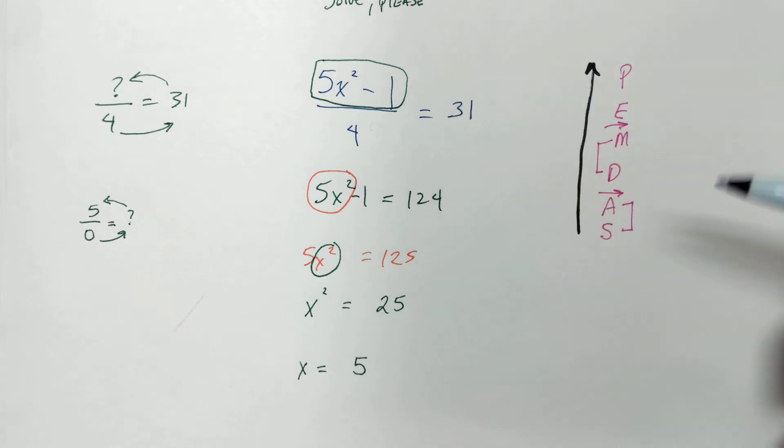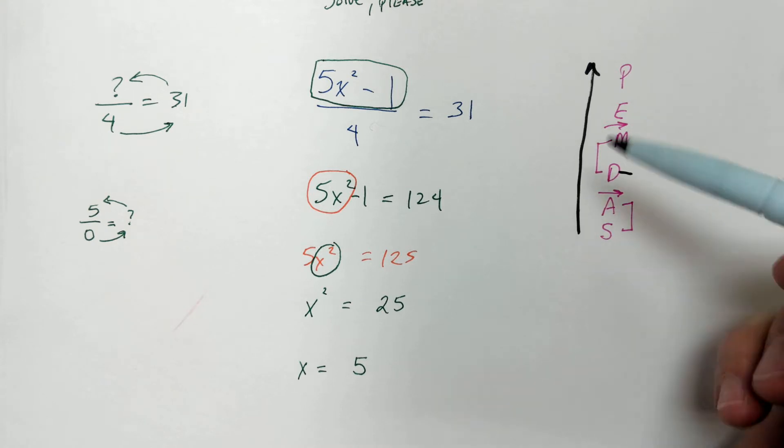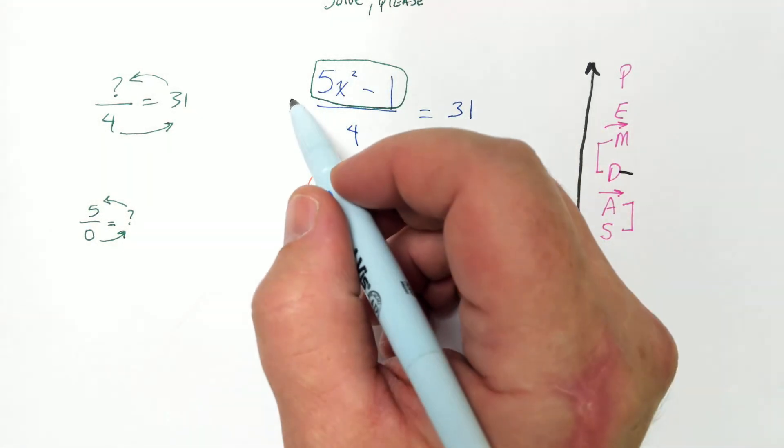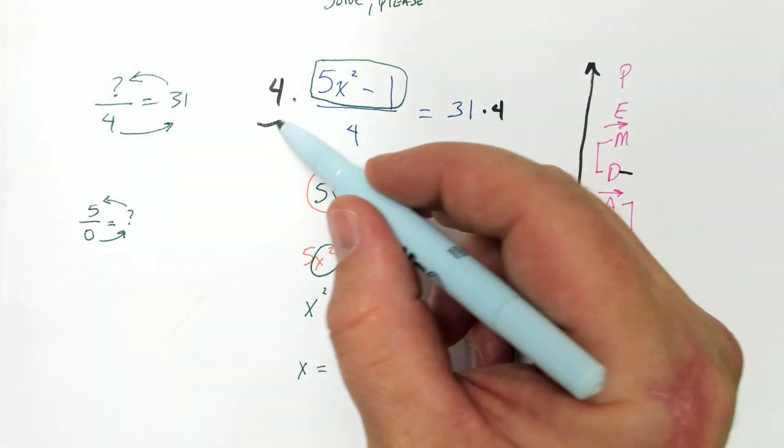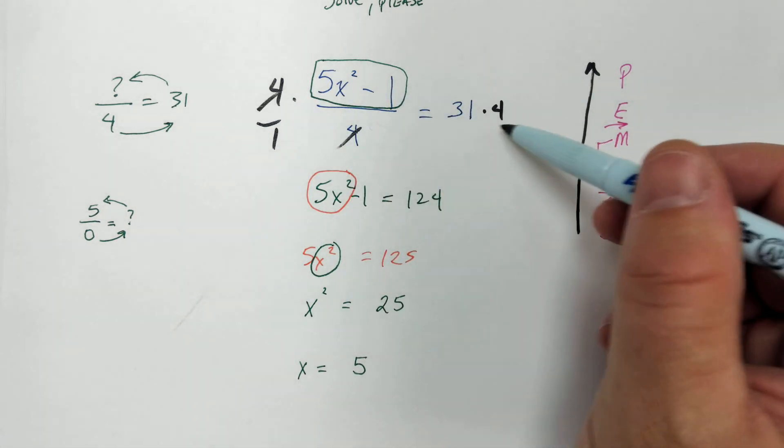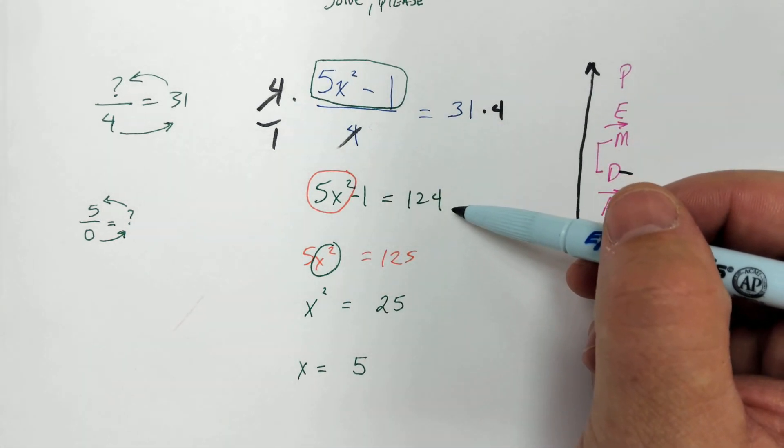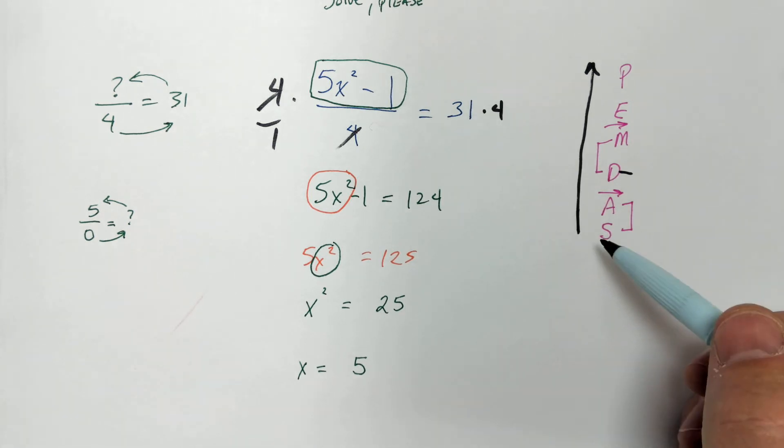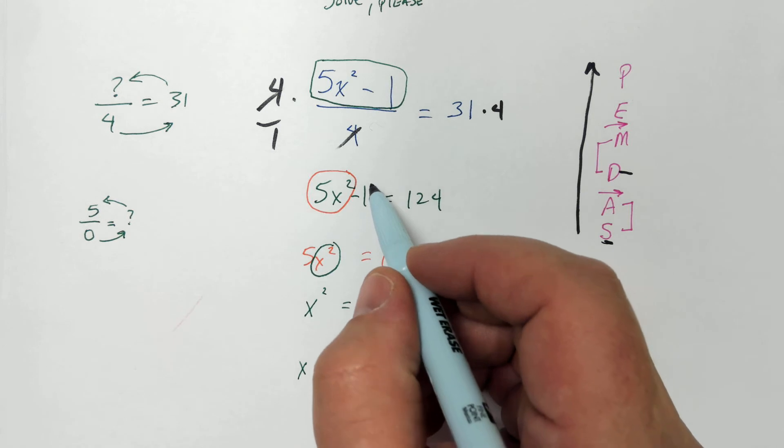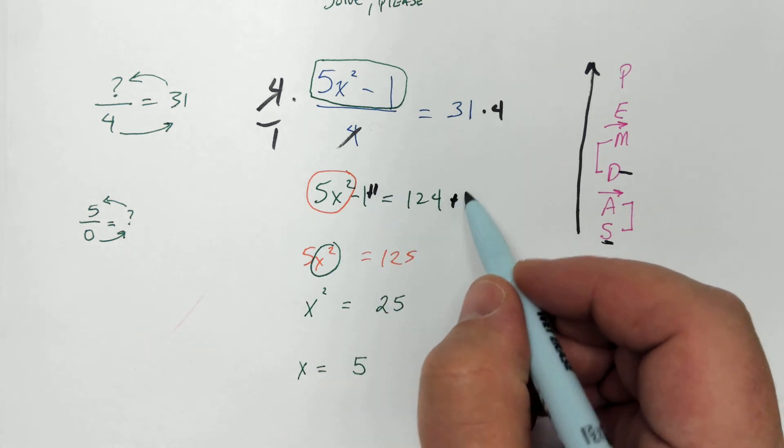So, the first thing we have that we can do is actually division. The opposite of division is multiplying, right? We're doing inverse operations, so we have to do everything the opposite. So, that's why you would multiply by 4. These reduce. And you're left with 124, right? Okay, so now we have this. And we have to do order of operations. We have to take care of subtraction.